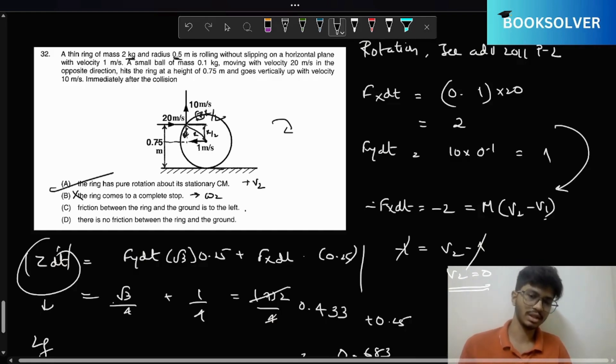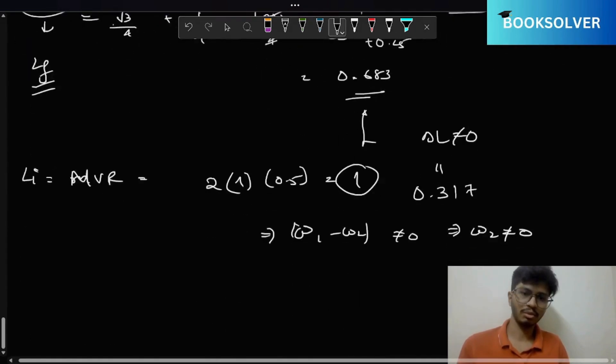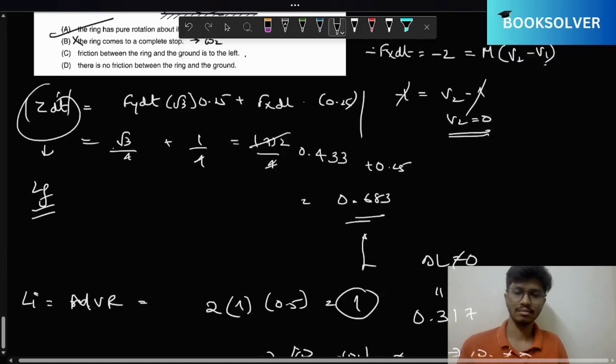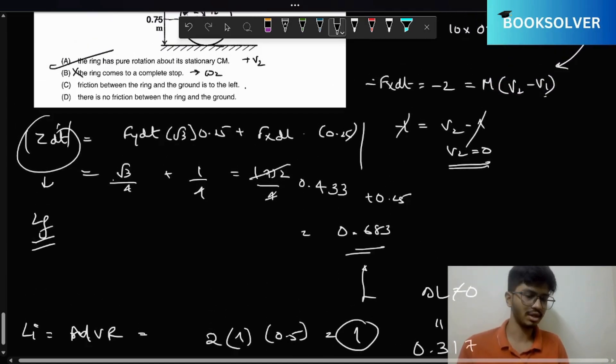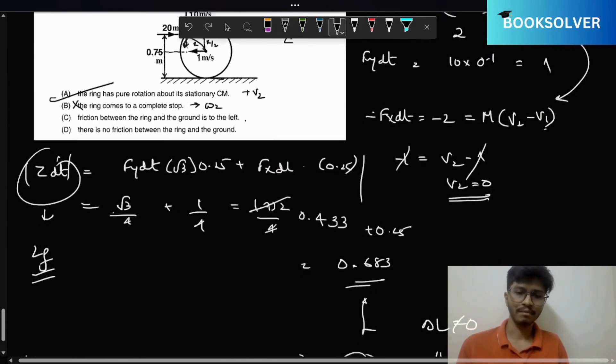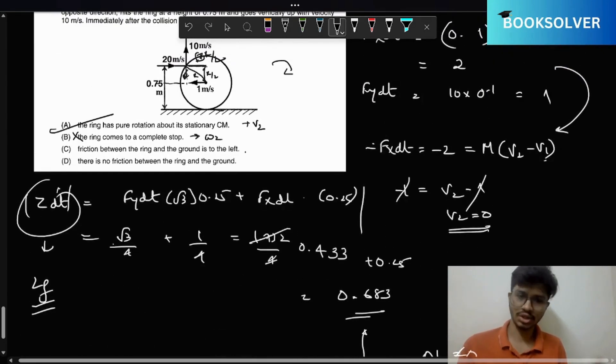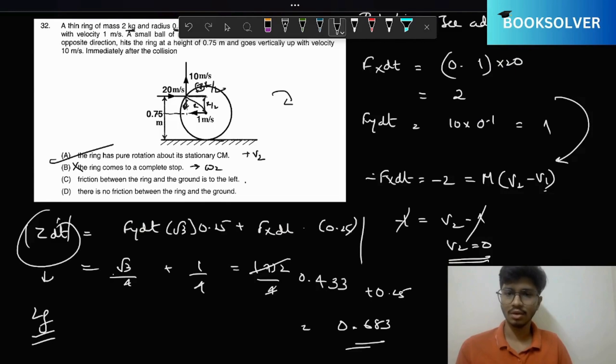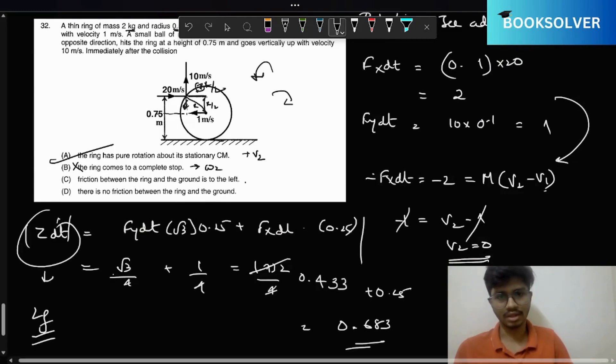The ring won't come to complete stop. Omega 2 will be there and it will perform pure rotation about its center of mass. The direction of pure motion—the final angular momentum is less than initial angular momentum, so we can say that the direction of the angular momentum is not changing.